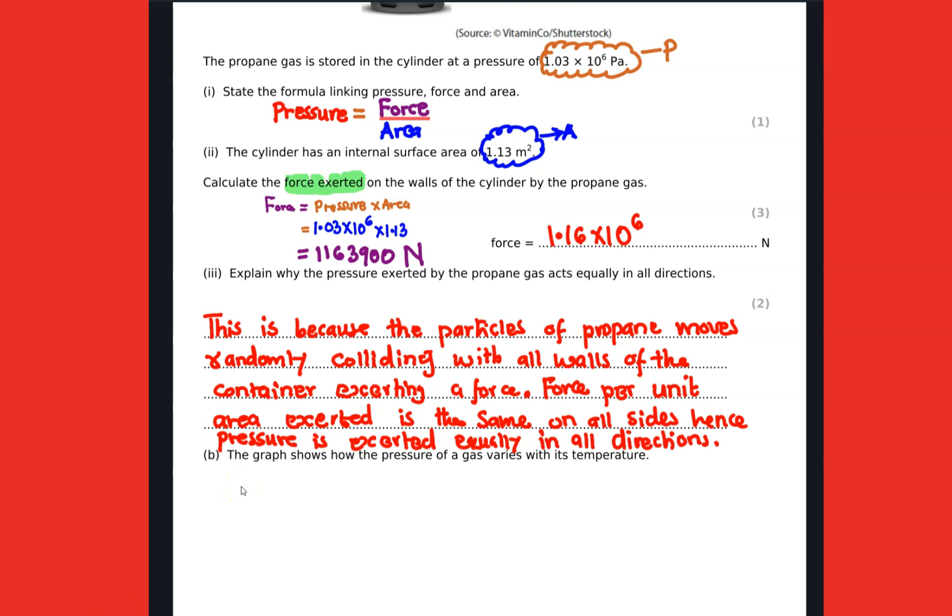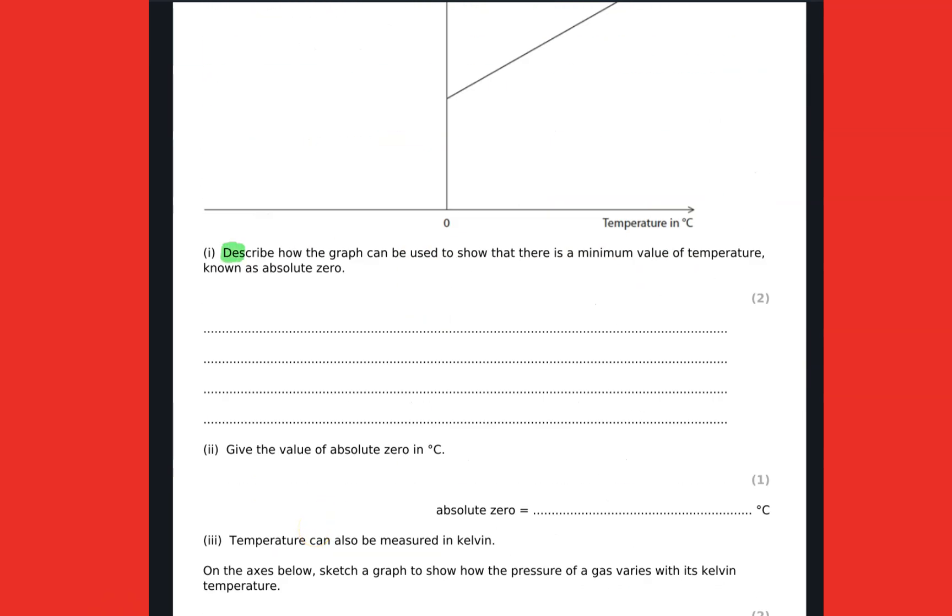The graph shows how the pressure of the gas varies with its temperature. So we are supposed to describe how the graph can be used to show that there is a minimum value of temperature known as absolute zero. First, when you have plotted a graph of pressure against temperature in degree celsius, if you extend or extrapolate or make this line to cut the x-axis by just extending it, it means we are going to get the absolute temperature.